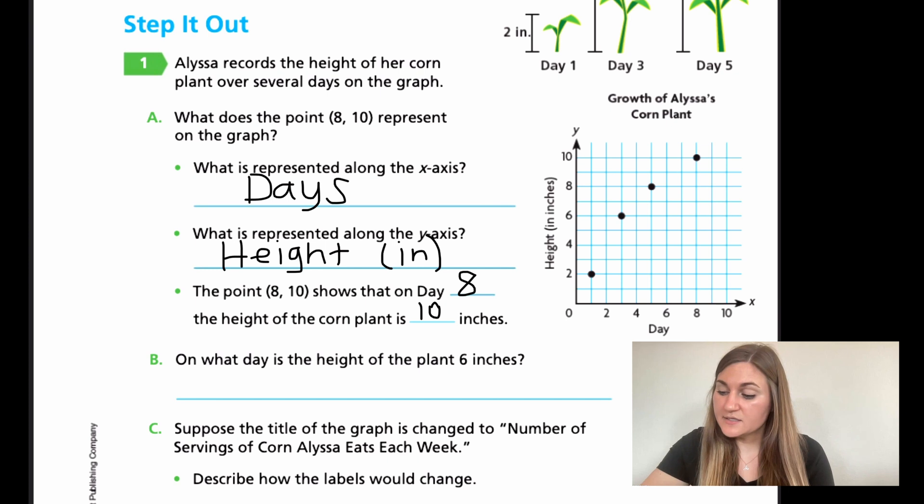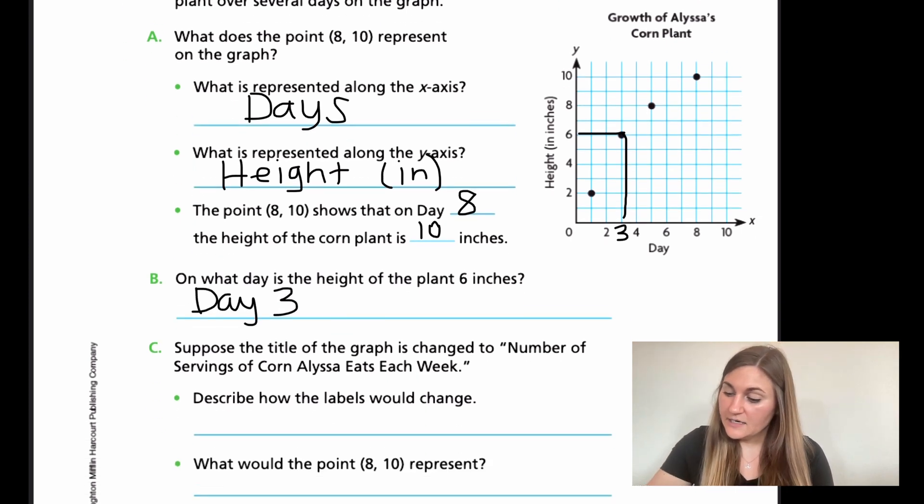For B, on what day is the height of the plant 6 inches? Let's go to the height and find the 6, so that would be on this line here. What day would that be? It's in between the 2 and the 4, which means it would be on that third day, so that would be on day 3.